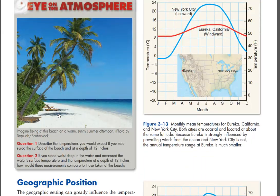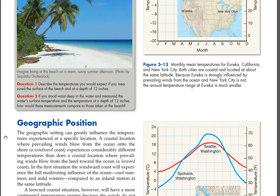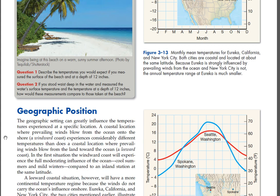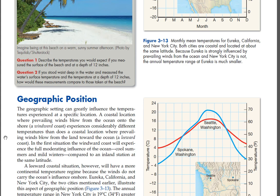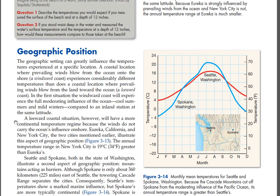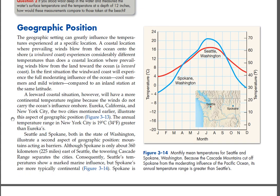Geographic Position. The geographic setting can greatly influence the temperatures experienced at a specific location. A coastal location where prevailing winds blow from the ocean onto the shore — a windward coast — experiences considerably different temperatures than does a coastal location where prevailing winds blow from the land toward the ocean — a leeward coast. The windward coast will experience the full moderating influence of the ocean (cool summers and mild winters compared to an inland station at the same latitude). A leeward coastal situation, however, will have a more continental temperature regime because the winds do not carry the ocean's influence on shore. Eureka, California, and New York City illustrate this aspect of geographic position (Figure 3-13). The annual temperature range in New York City is 19°C (34°F) greater than Eureka's.